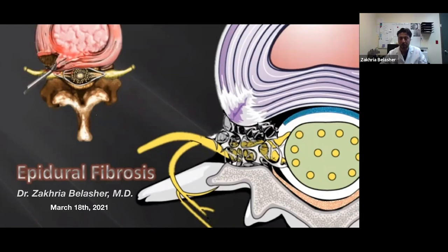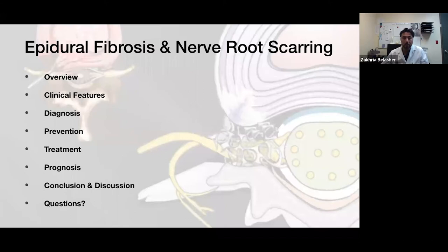Hi everybody, this is Dr. Blasher from Inside Surgical Hospital, Inside Family. I'm here today to talk about epidural fibrosis, which is one of the common unavoidable complications after any surgery. We're going to cover a general overview: how epidural fibrosis and scar happen, how we diagnose it, how the patient will present after surgery, what the options for treatment are, and what the outcomes are for any intervention, followed by conclusion, discussion, and questions.